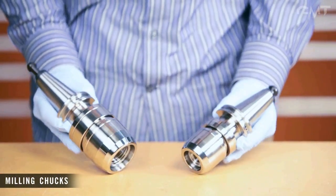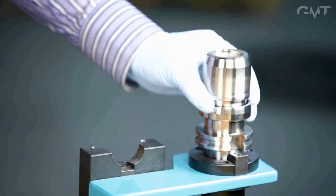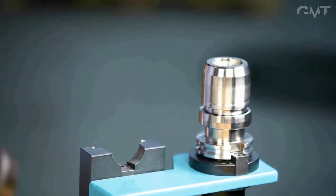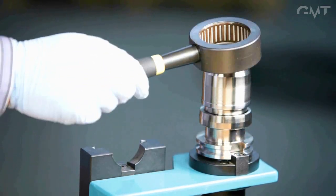Milling chucks are very precise tool holders with high gripping power. They are ideal for holding larger tools as well as high speed applications and mold making.